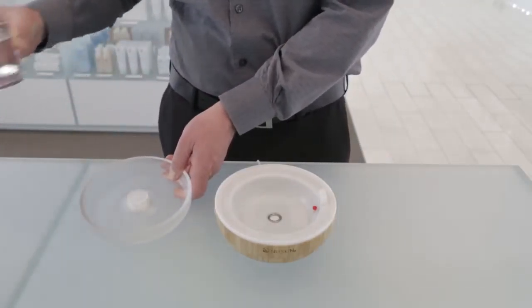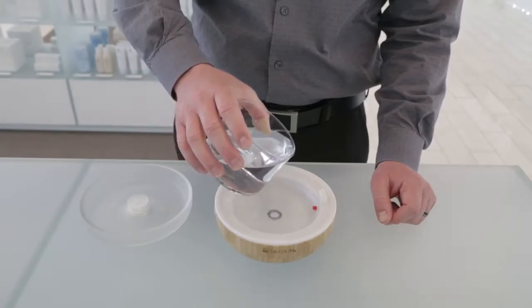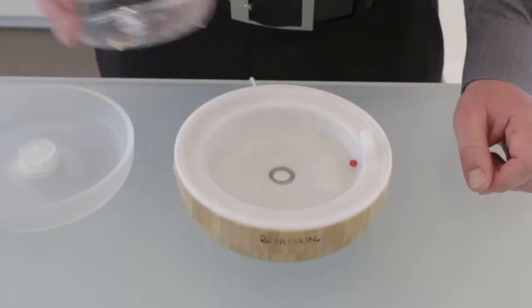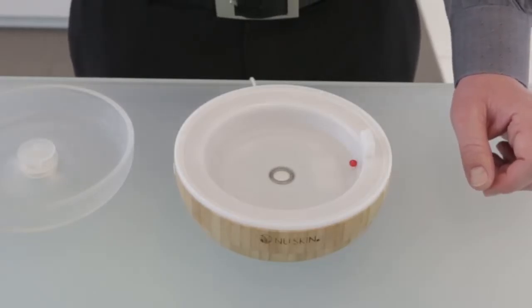first carefully pour about three quarters of a cup of clean water into the diffuser reservoir. Be careful to not fill the water above the red indicator. The diffuser will not function properly if it has too much water.